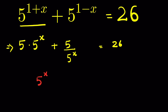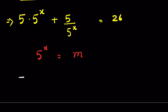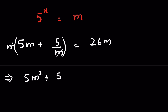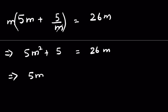Now let's substitute: let 5 raised to the power x equal m. Then we have 5m plus 5 upon m equals 26. Multiplying both sides by m gives 5m squared plus 5 equals 26m, or 5m squared minus 26m plus 5 equals 0.